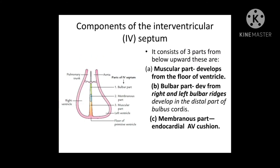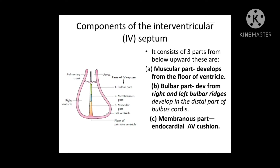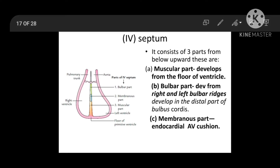Now coming to the development of interventricular septum. We can see in this diagram that interventricular septum is made up of three parts: the bulbar part, membranous part, and muscular part.